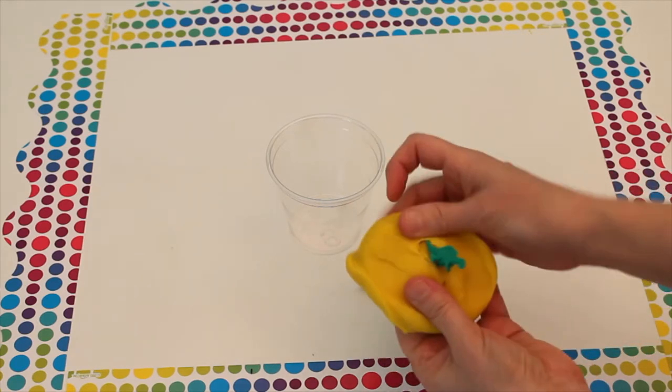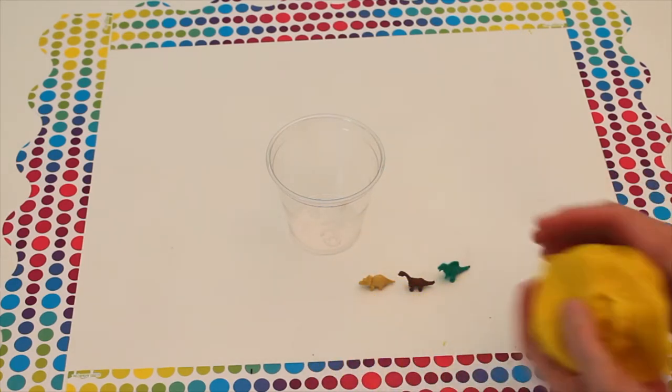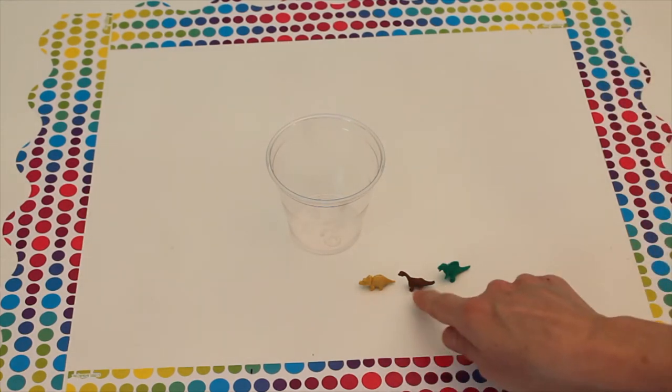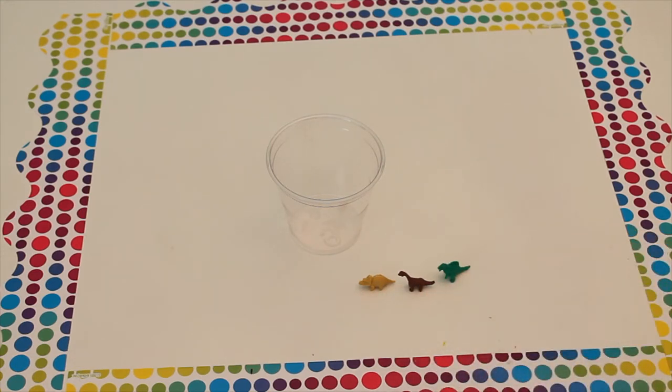I see something, something green. There we have another one. Yellow, brown, and green. One, two, three. That was fun to find those surprises.